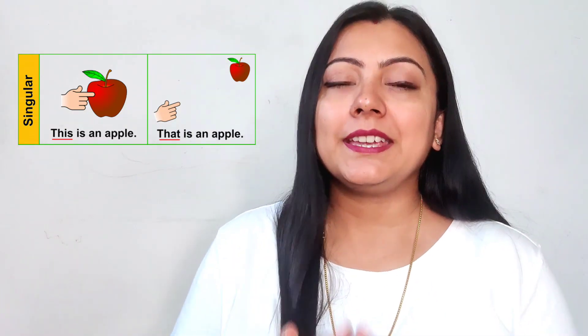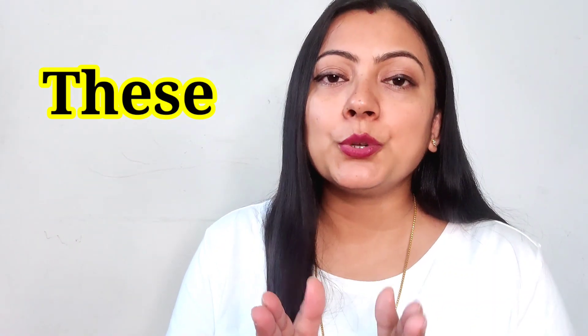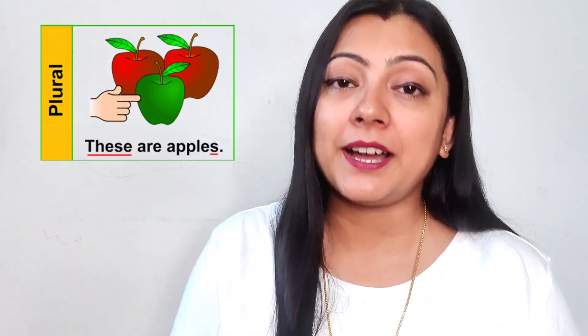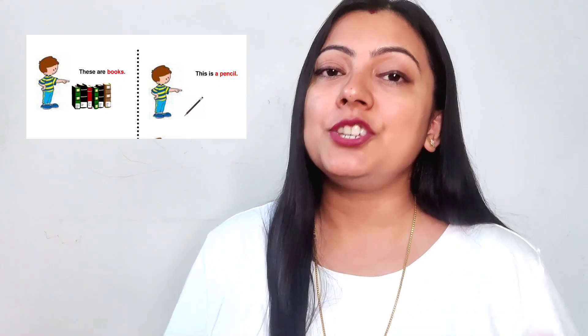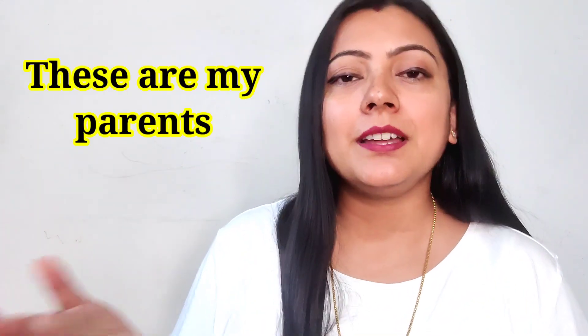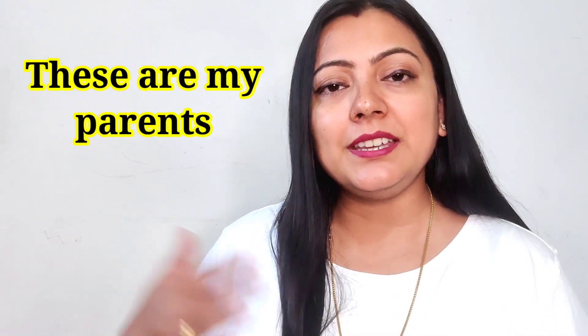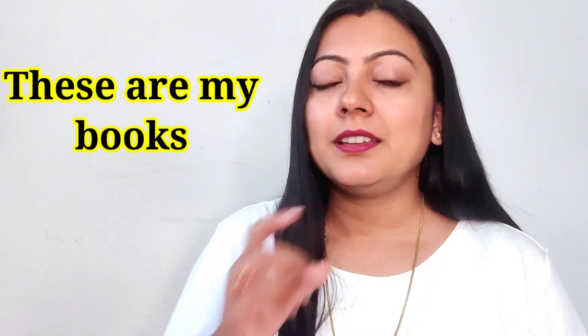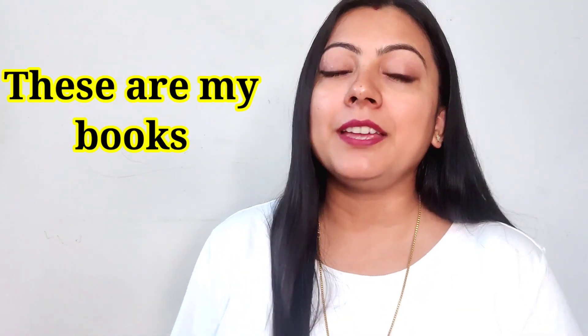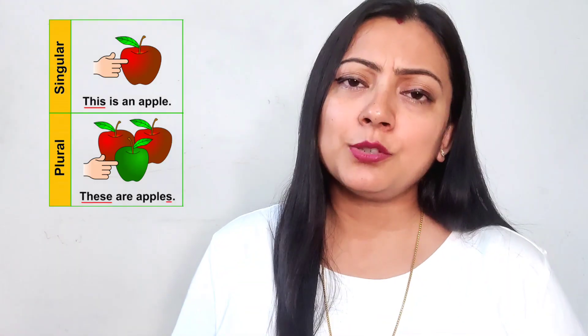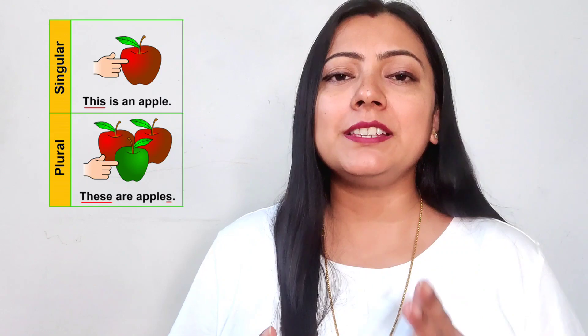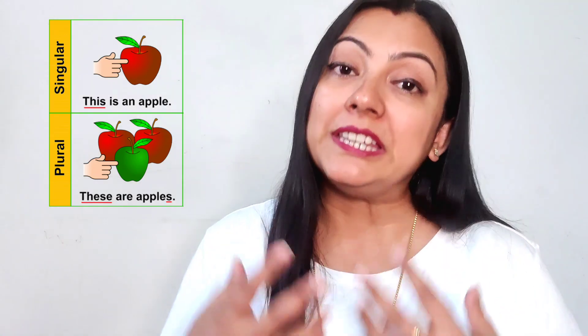Now let's talk about 'these' and 'those.' 'These' is the plural form of 'this' — it refers to multiple objects near the speaker. For example: this is my book, but if there are multiple books near you, you say these are my books. So 'these' is used for more than one object close to the speaker.